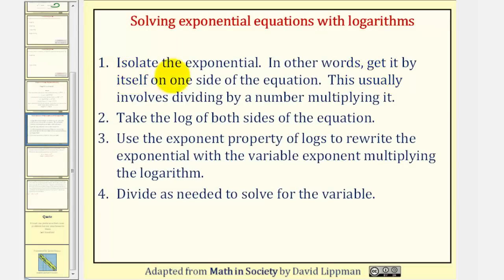Step one, we want to isolate the exponential part of the equation. Step two, we'll take the log of both sides of the equation. Step three, we'll use the exponent property of logs to write the exponential with the variable exponent multiplying the logarithm. And then four, we'll divide as needed to solve for the variable.